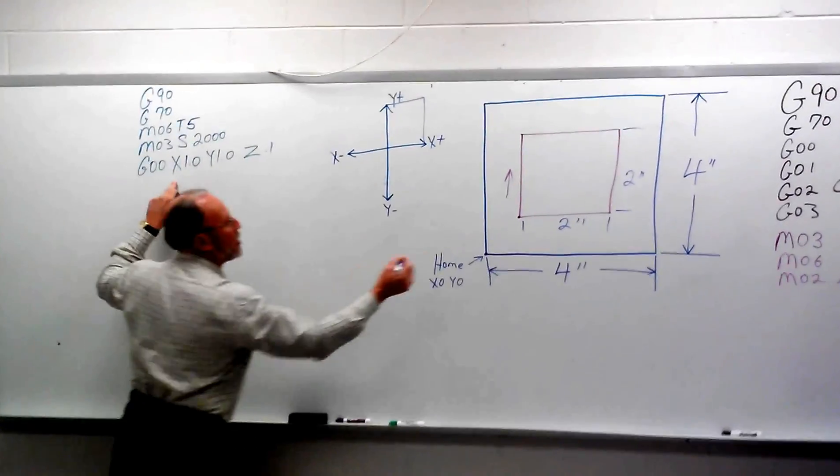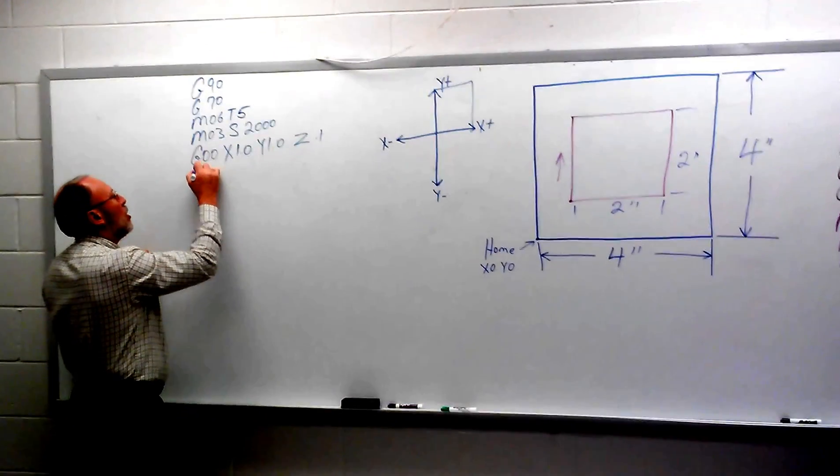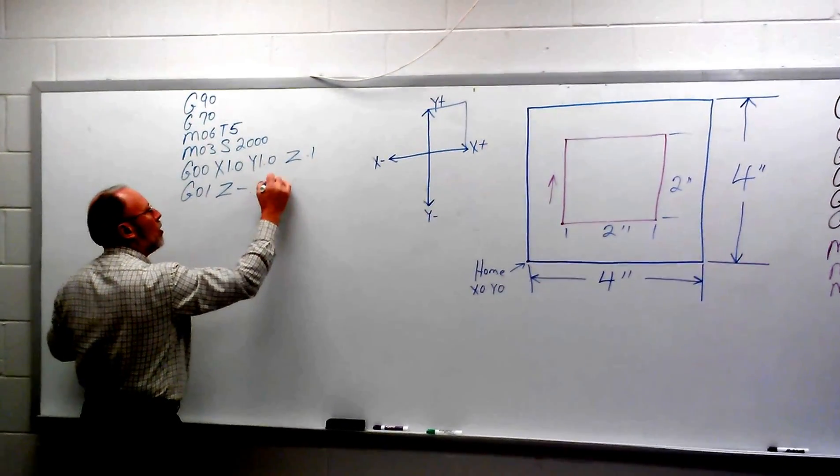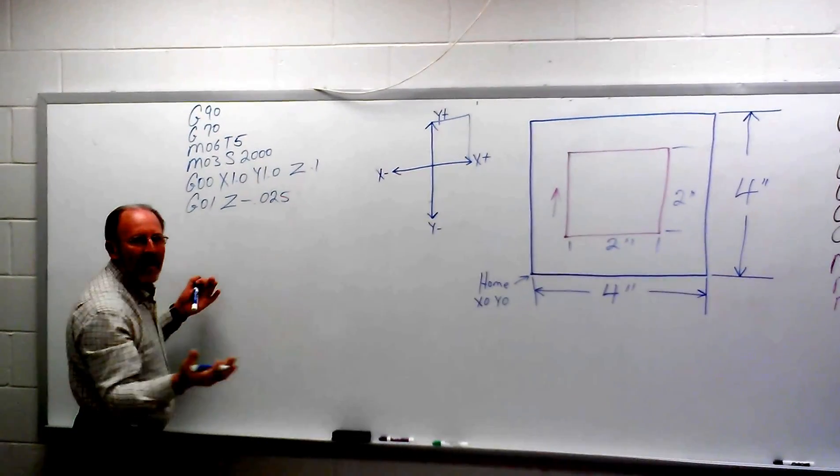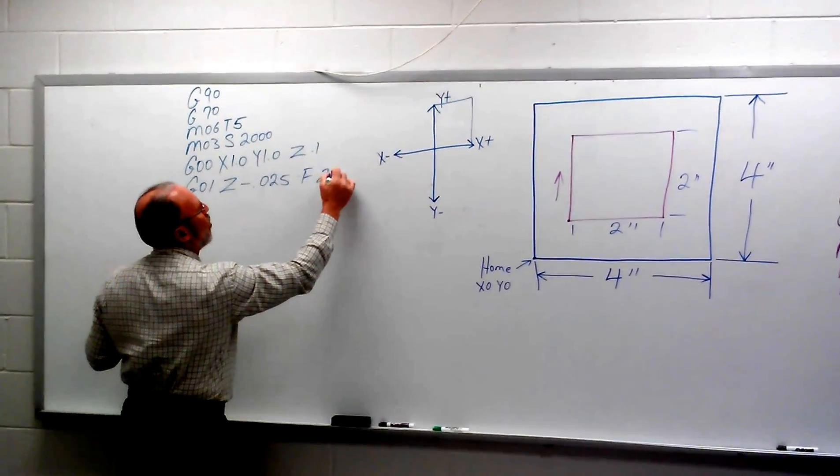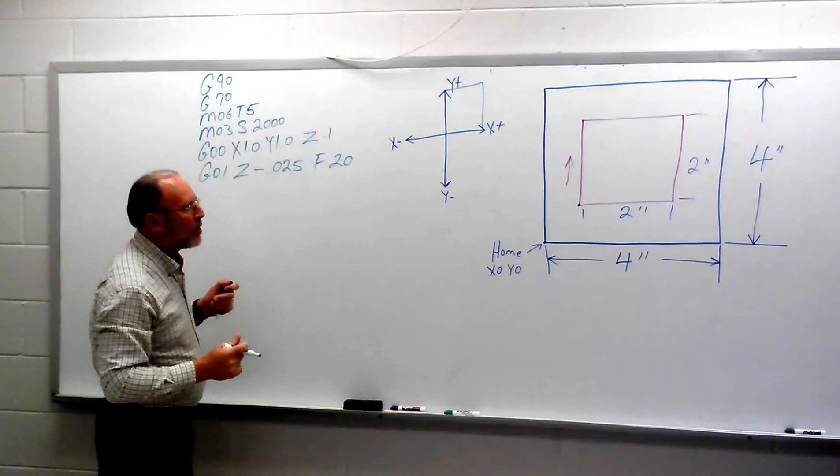Now, we've positioned ourselves here. We can go ahead and go down into the workpiece. That would be a G01, Z minus 0.025 or 25 thousandths of an inch. We'll give it an F for feed, and that would be 20 inches per minute. That's how we express our feed rate, inches per minute.